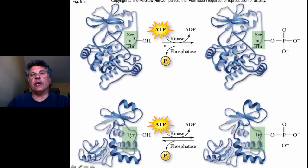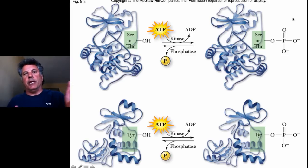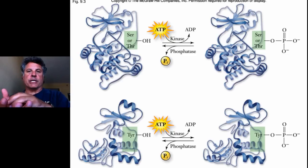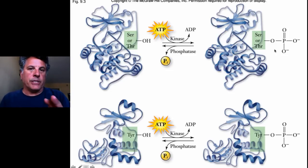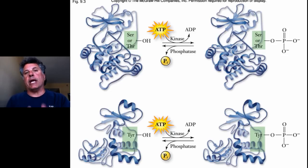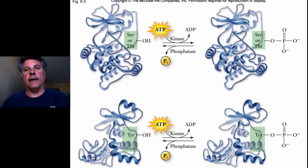Kinases are a special class of enzyme that phosphorylate target proteins. For example, a serine-threonine kinase will catalyze the removal of a phosphate from ATP, producing ADP, and will phosphorylate serine or threonine target amino acids on target proteins. This is like adding a large molecular moiety to a protein — it can change the protein's conformation and influence its activity. Phosphorylation can either make a previously inactive protein active, or inhibit a previously active protein and block its activity.